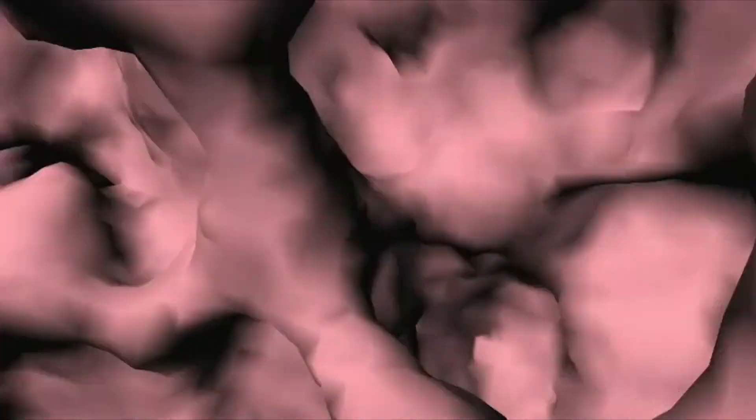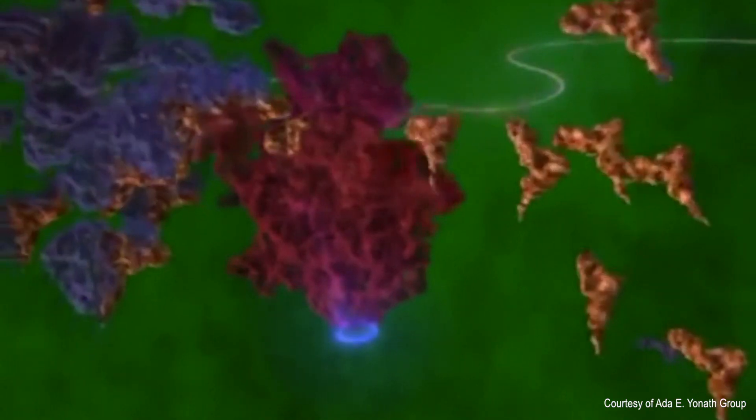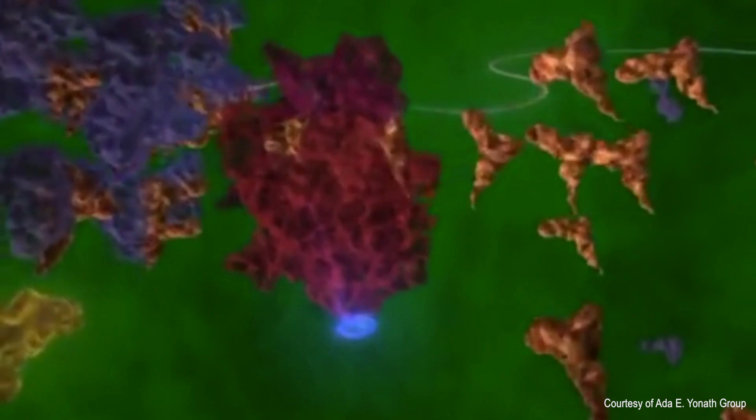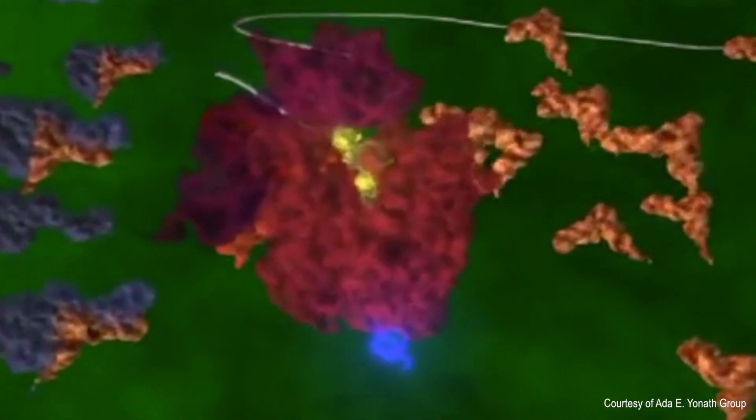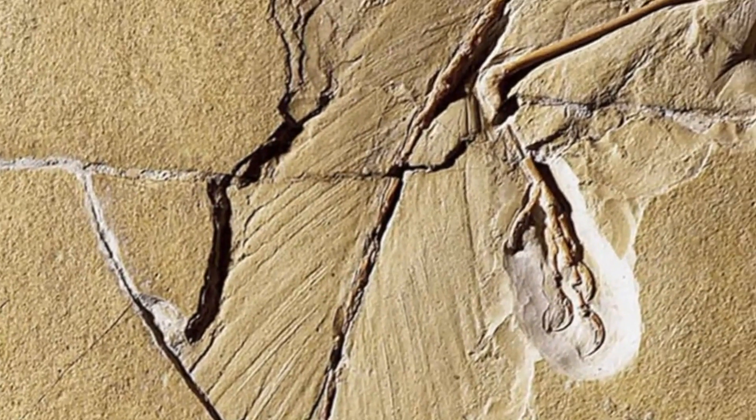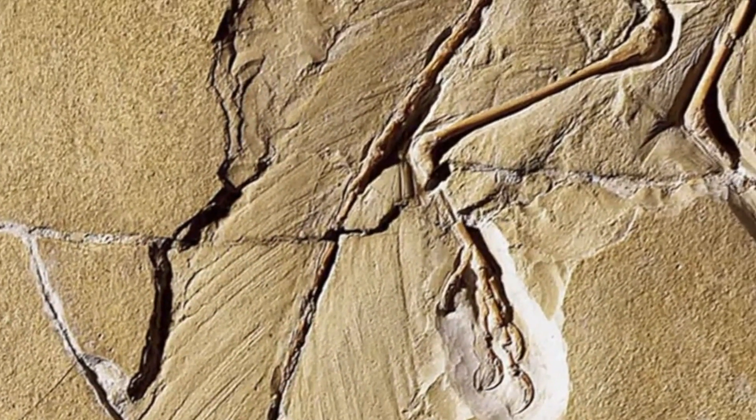These allow one, for example, to study the detailed atomic structure and folding configurations of protein molecules often containing several tens of thousands of atoms using diffraction, or probe the chemical composition of the feathers of Archaeopteryx fossils using X-ray fluorescence.